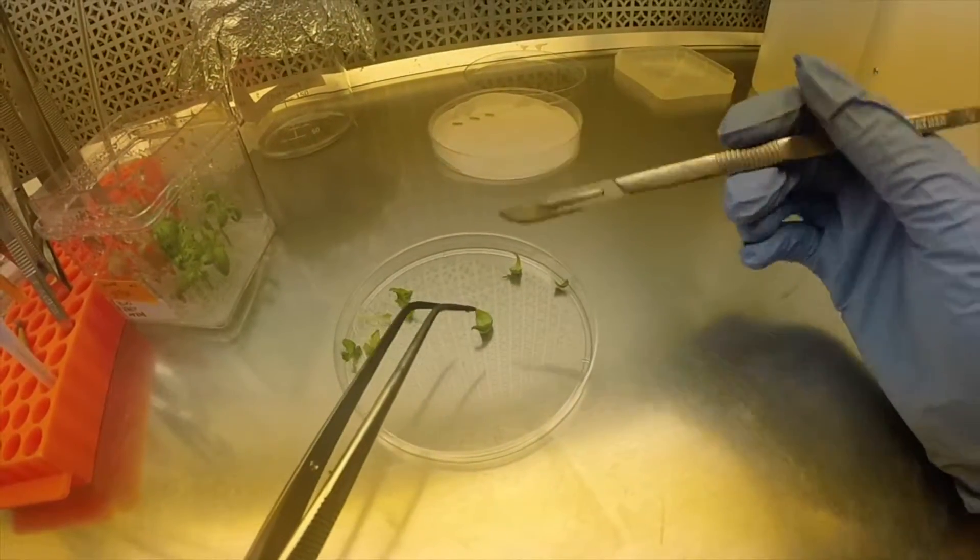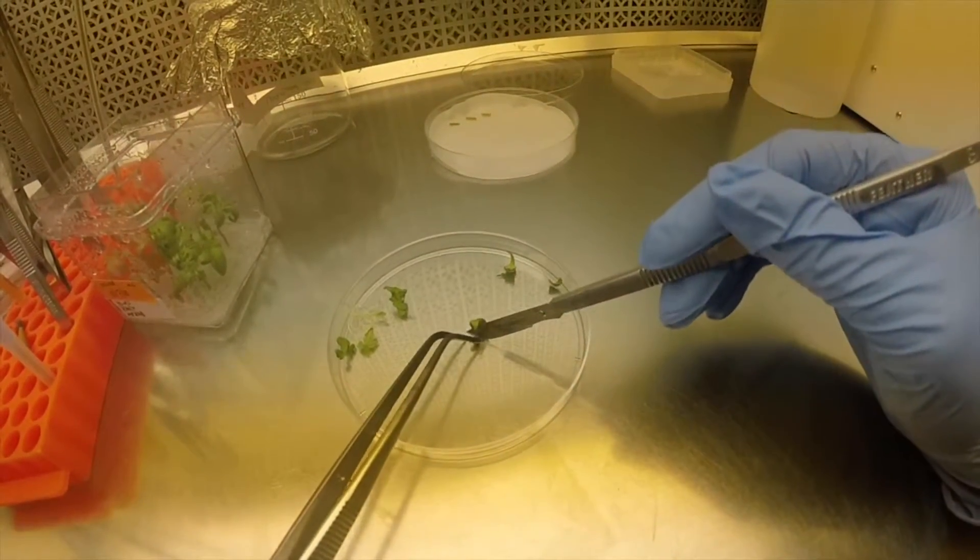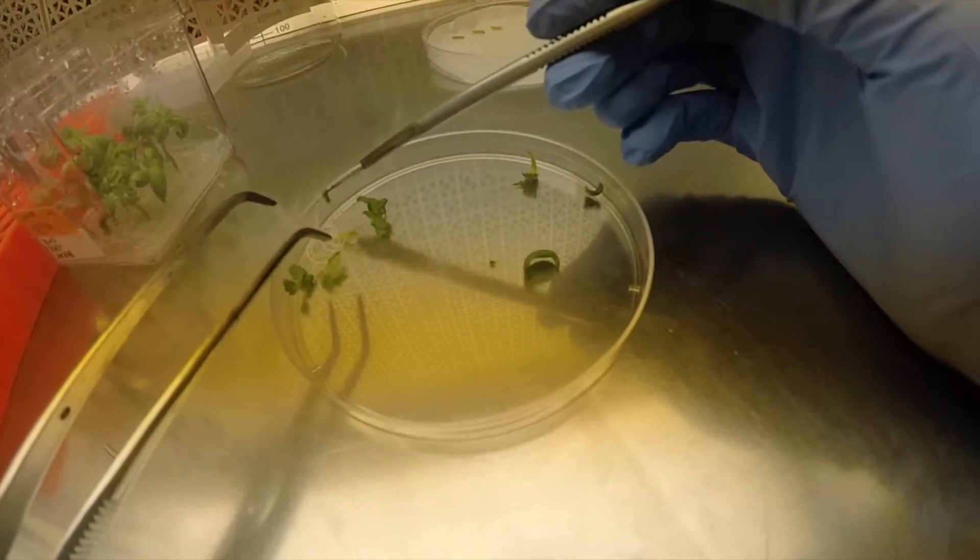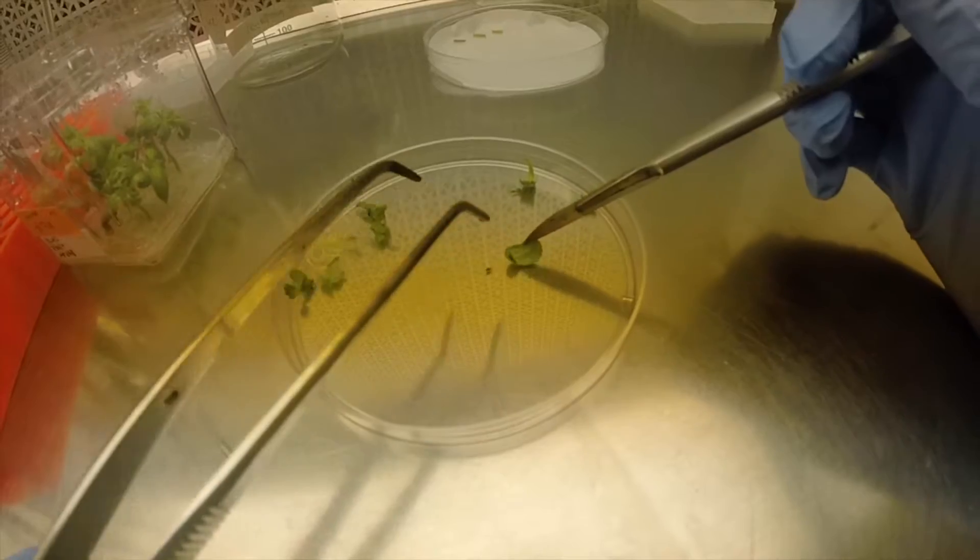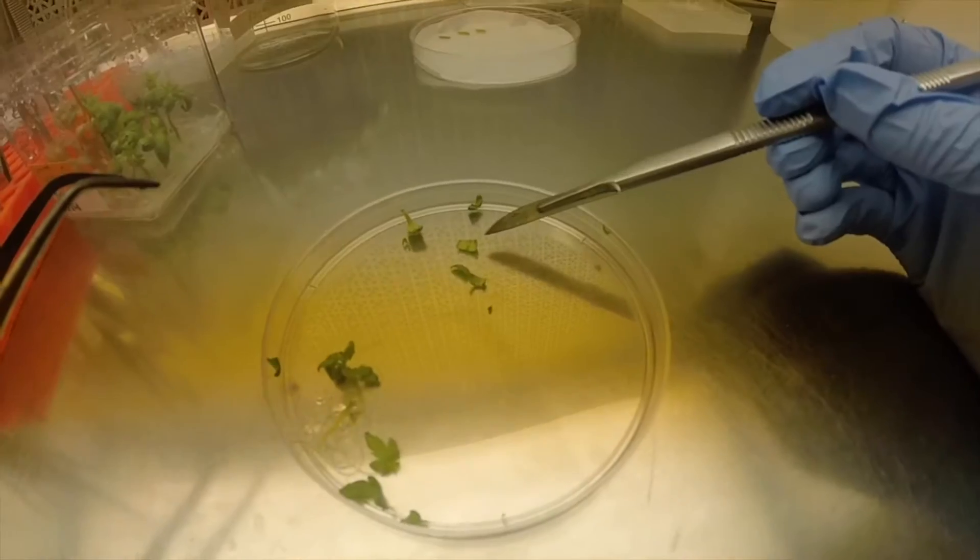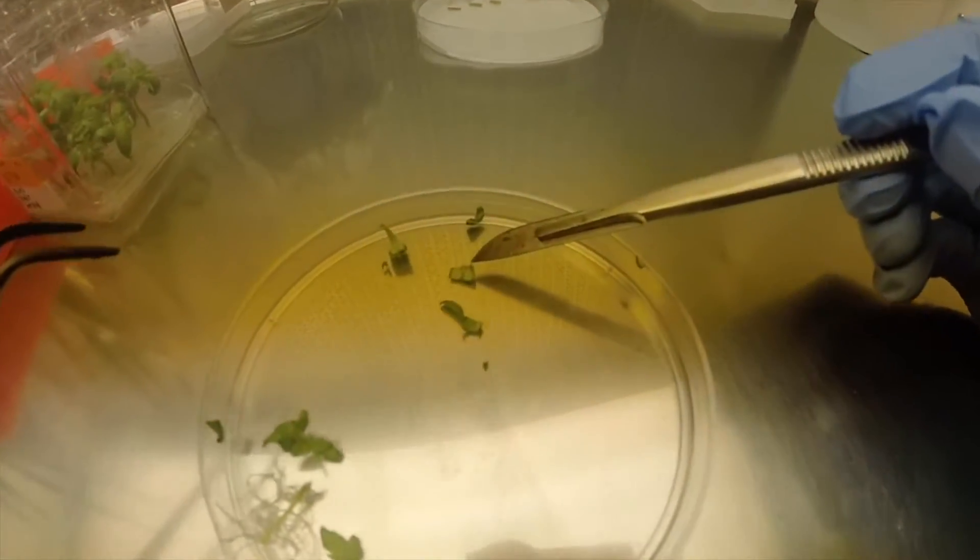We're going to start by cutting off the tip of the leaves like so and discarding that. About this size is probably about as big as we want to go, and even a little bit bigger would be fine as well.